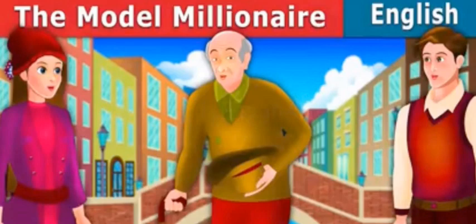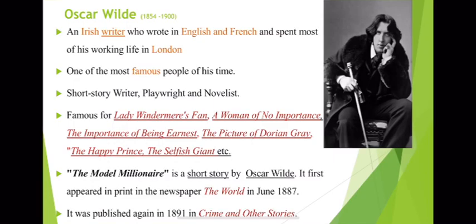Oscar Wilde is an Irish writer who wrote in English as well as in French, and he spent most of his lifetime in London. He is one of the most famous people of his time — a short story writer, playwright, and novelist. He has also written some poems. Oscar Wilde is famous for Lady Windermere's Fan, A Woman of No Importance, The Importance of Being Earnest, The Picture of Dorian Gray, The Happy Prince, The Selfish Giant, etc.